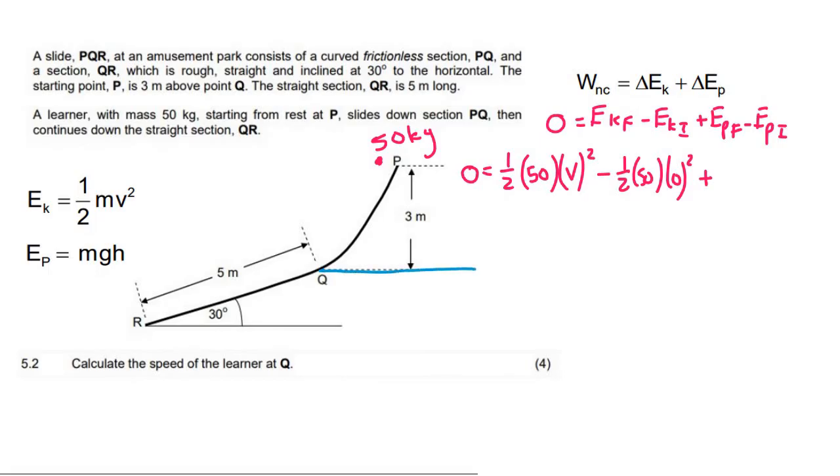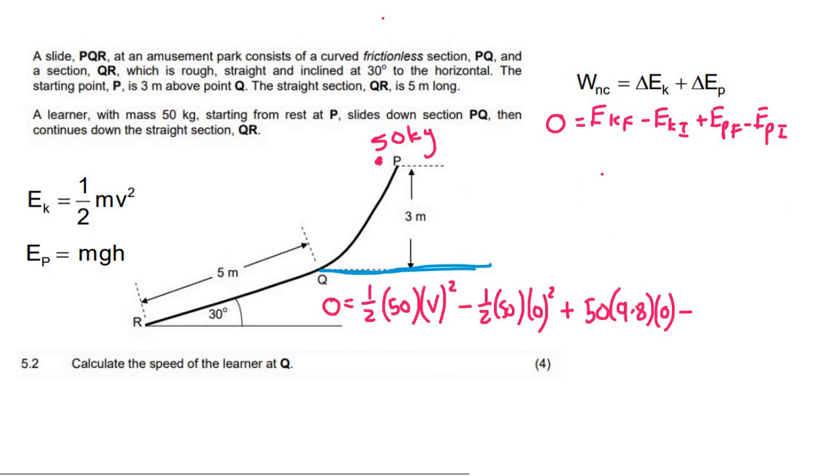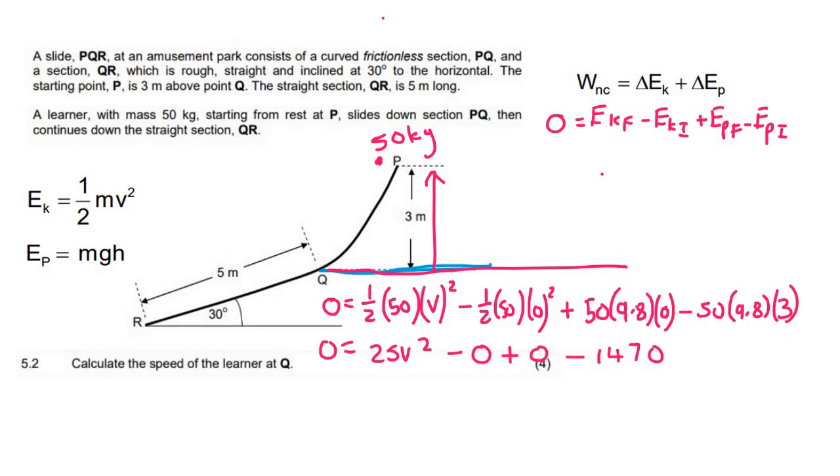So set your starting point wherever you feel comfortable. I'm going to set my starting point at Q. And so what that means is that my final height will be 0. Because if Q is my reference point, then the height is 0 over there. So that's going to be a mass of 50 times by gravity of 9.8 times by 0. Minus, the initial mass is obviously 50, 9.8. And if Q is my reference point, then the height of P would be 3 meters. There we go. So now we're just going to go ahead and simplify this all a little bit. So this would be 25 V squared minus 0 plus 0 minus 1470. You then take the 1470 over to the left. You get that. You can then divide by 25, which would give you 58.8. And then take the square root. And that would give you 7.67. 7.67 meters per second. And so that would be the velocity or the speed of the learner at Q.